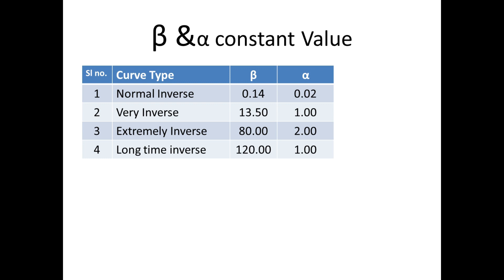When we substitute these values in the formula, for normal inverse we get: T equals TMS times 0.14 divided by (Ia/Is) to the power 0.02 minus 1.